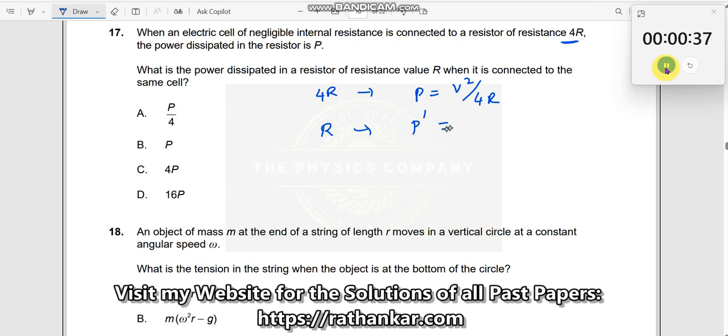Let me take power is P dash, which is connected to the same cell. Same cell means V is not changing. Then it will be V square divided by R. Now what is he asking? He wants P dash in terms of P. How do I relate it?